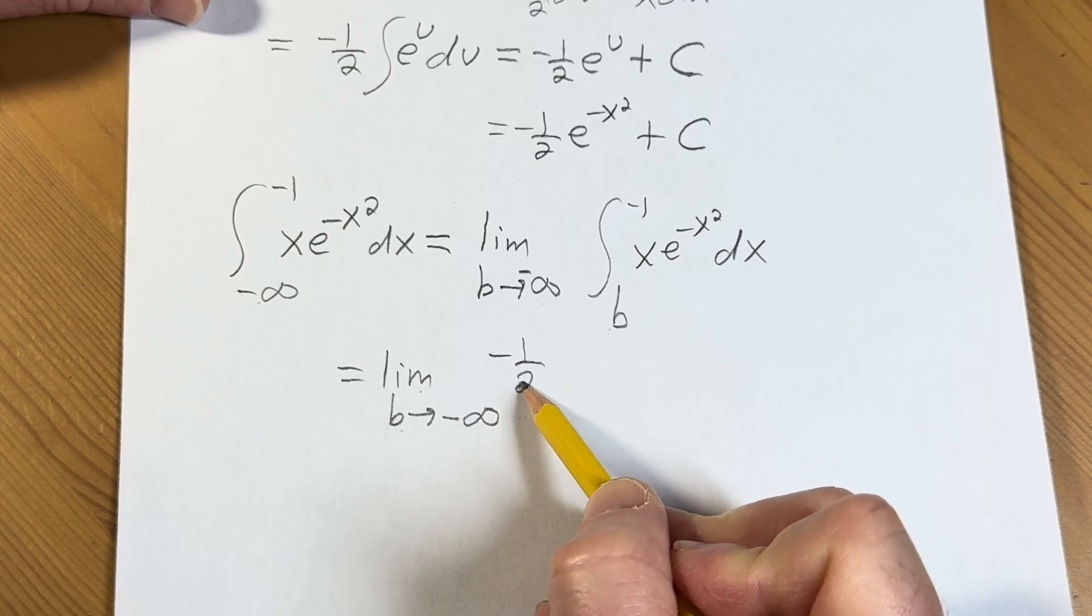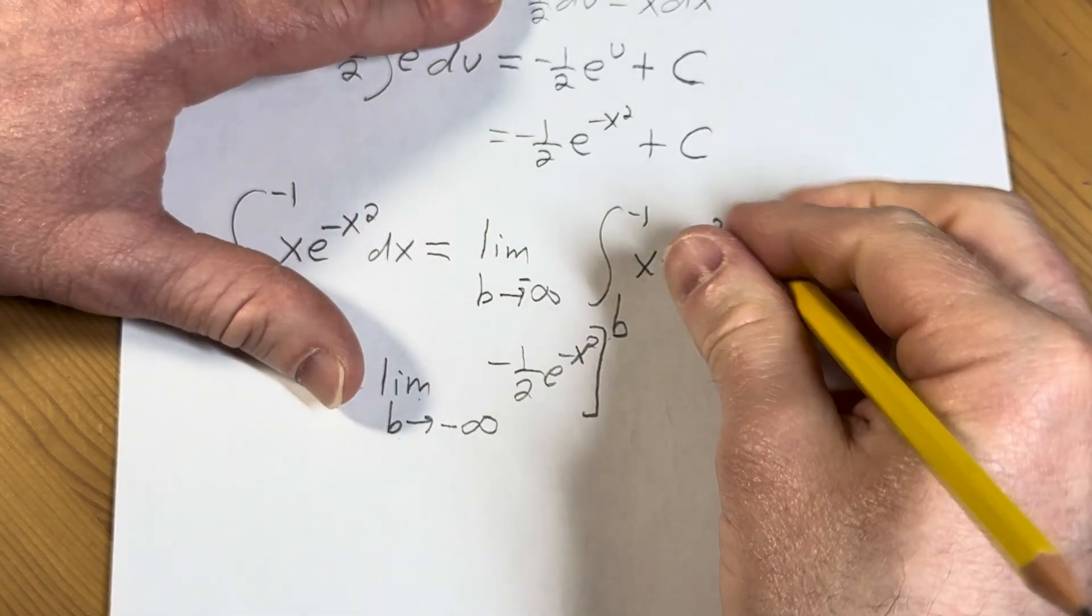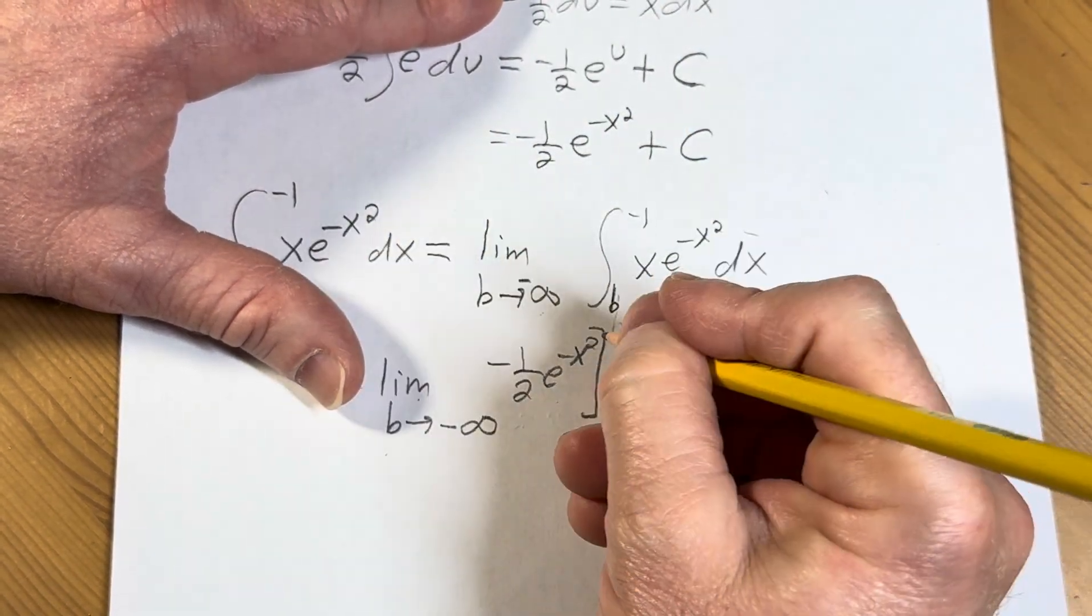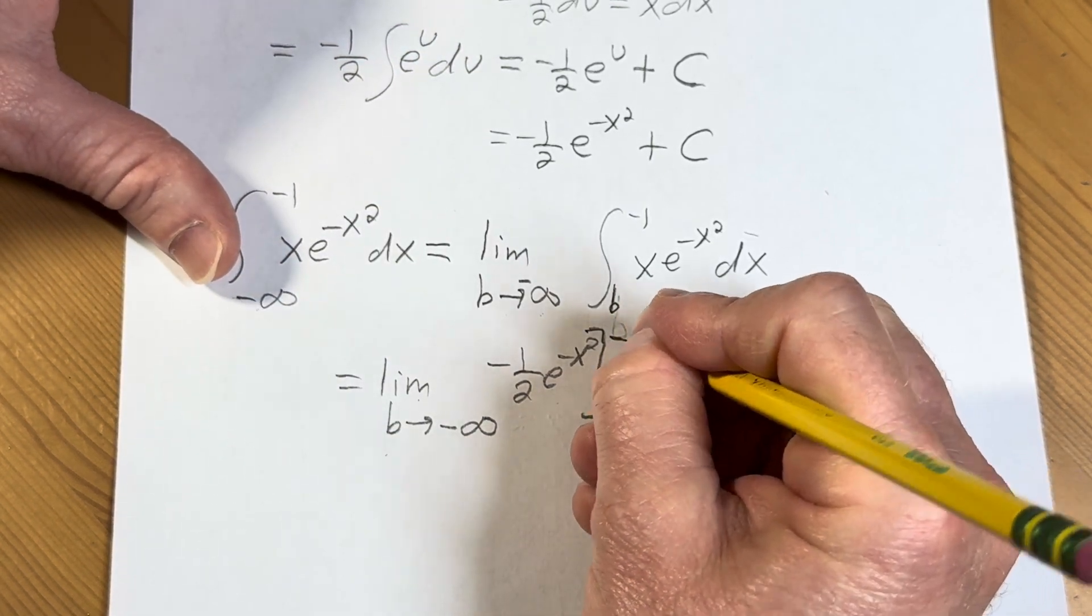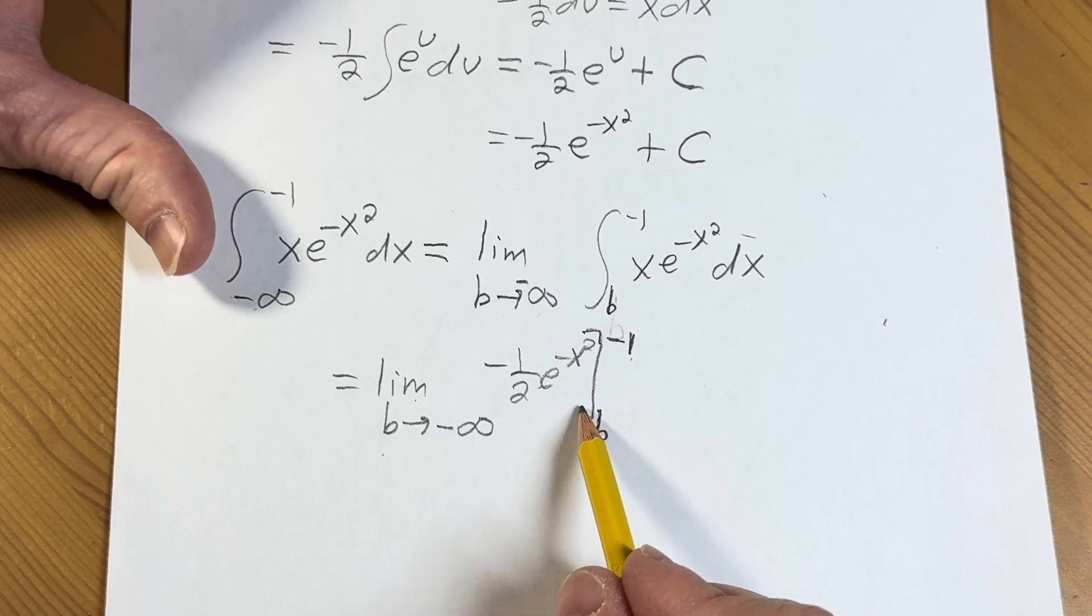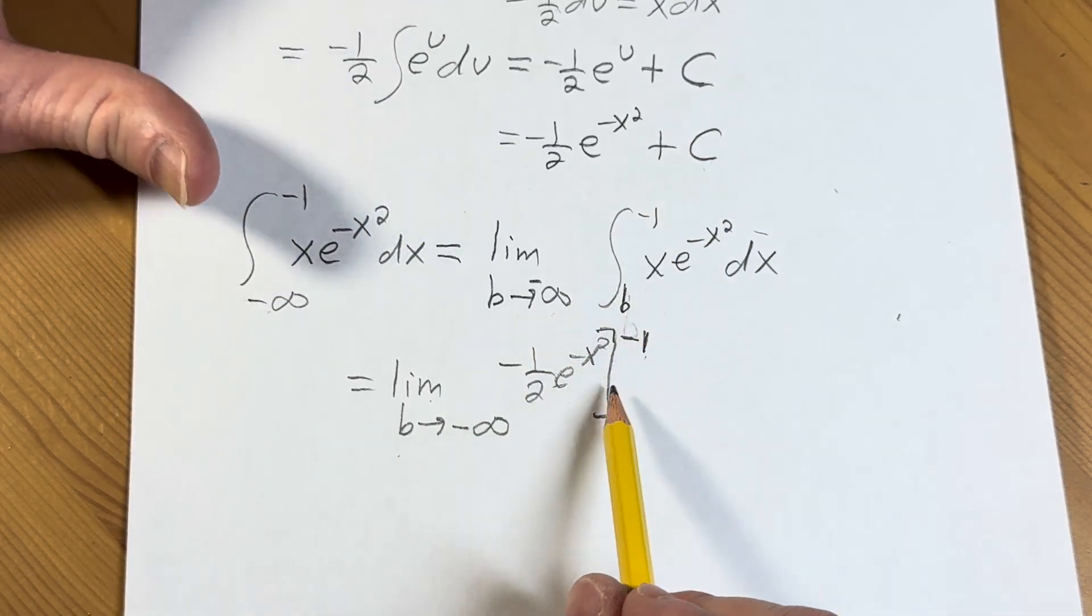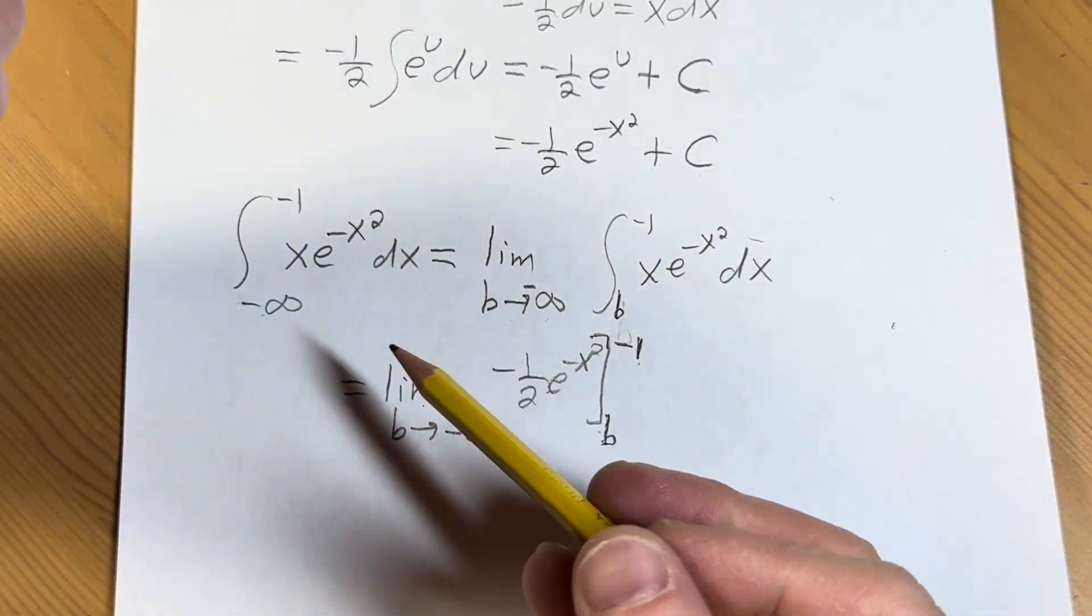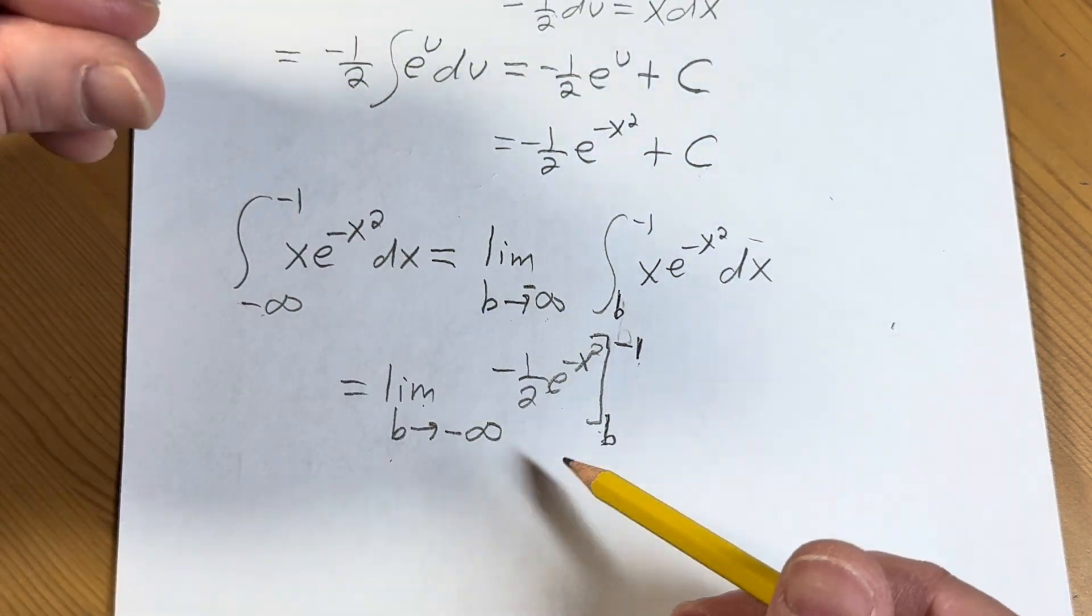we're going to get negative 1 half e to the negative x squared. You don't have to worry about the plus C, okay? Because what happens is when you apply this here, you're going to plug in the negative 1 and subtract and then plug in the b. When you subtract, the C's will cancel. So whenever you have a definite integral, you don't have to write the plus C because the C's will cancel during the subtraction process of evaluating the definite integral.